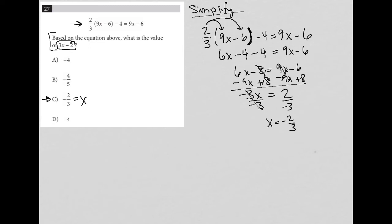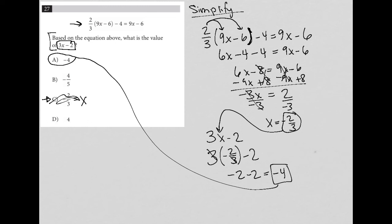So we have to be very careful. So I want 3x minus 2, which means I'm going to take my x value and just plug it in to the 3x minus 2. So I have 3 times negative 2 thirds minus 2. 3 times negative 2 thirds, well, the 3s would cross-cancel, leaving me with negative 2 minus 2. And therefore, the answer is negative 4, answer choice A.